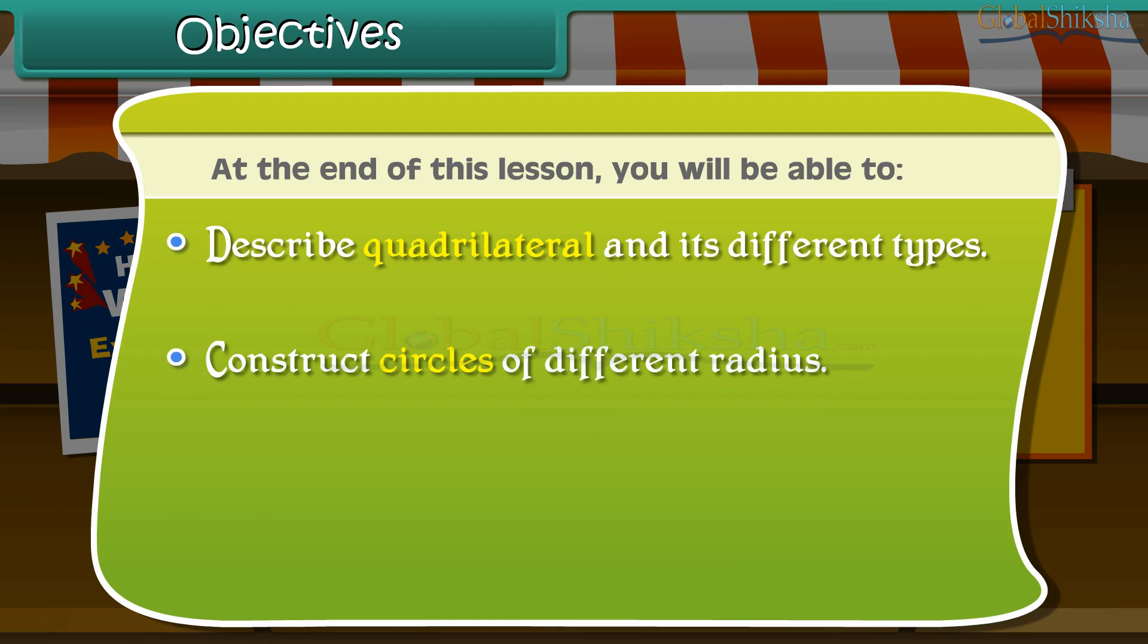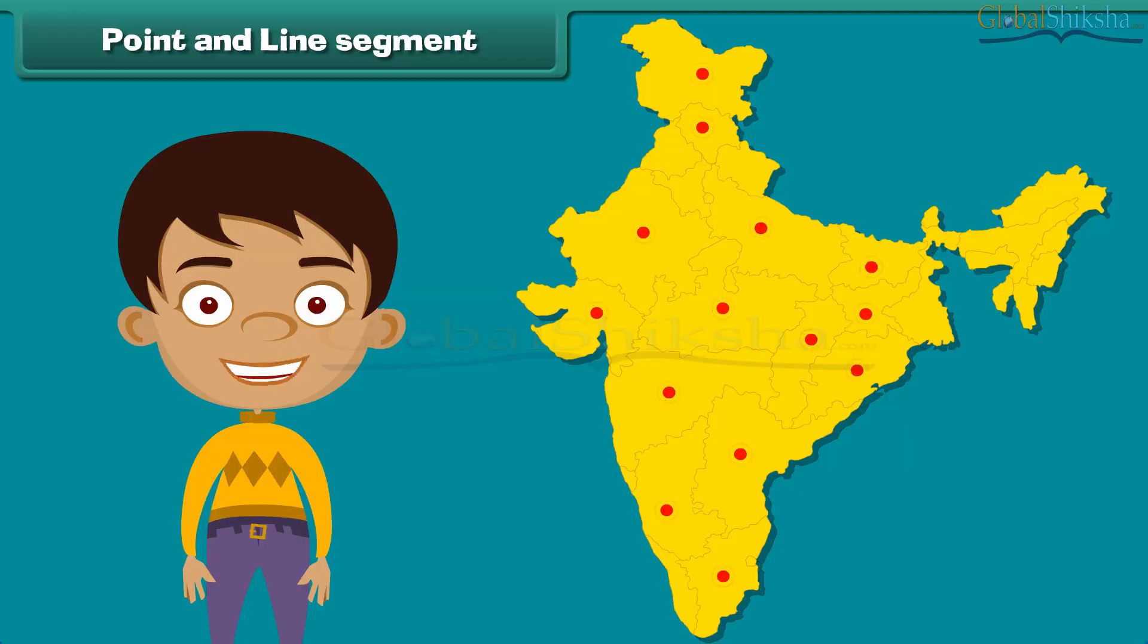Look at this Indian map. We see that the cities are represented by dots. These are called points.